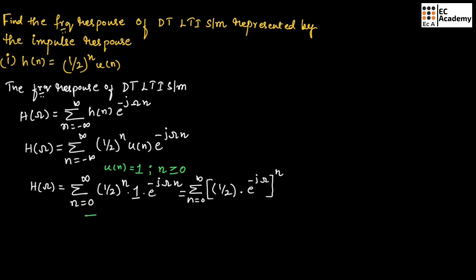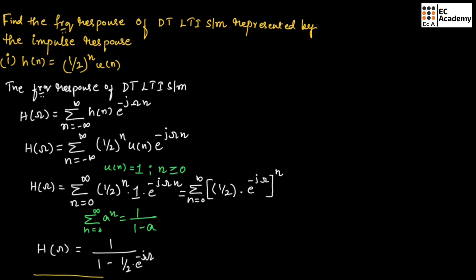We know the standard formula: the summation from n equals 0 to infinity of a^n equals 1 divided by (1 minus a). Therefore, H(ω) equals 1 divided by (1 minus (1/2)e^(-jω)). This is the frequency response for the first problem.